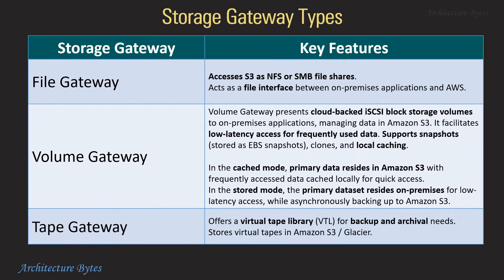Storage Gateway types: File Gateway accesses S3 as NFS or SMB file shares and acts as a file interface between on-premise applications and AWS. Volume Gateway presents cloud-backed iSCSI block storage volumes to on-premise applications and manages data in Amazon S3. It facilitates low-latency access for frequently used data and supports snapshots stored as EBS snapshots and local caching.